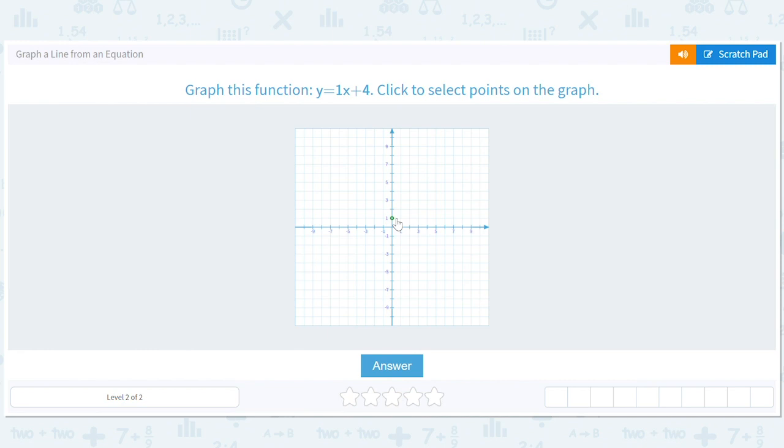So here we have a y-intercept of four and a slope of one. So we run one to rise one and voila.